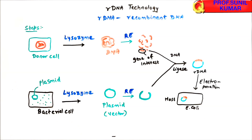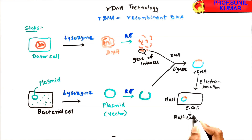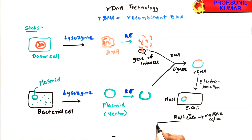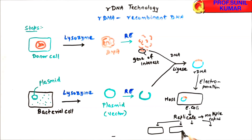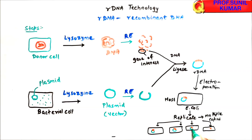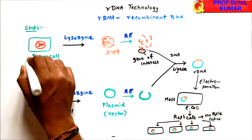The host we always use is E. coli. The rDNA is introduced into the host. The host then replicates, producing multiple copies. All of these copies contain the plasmid carrying the gene of interest — these are called clones.